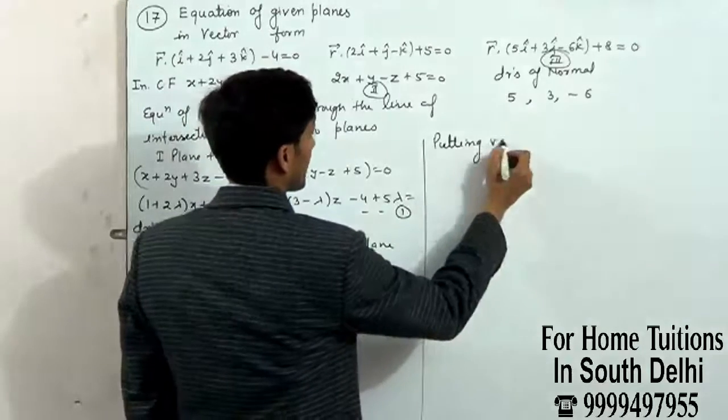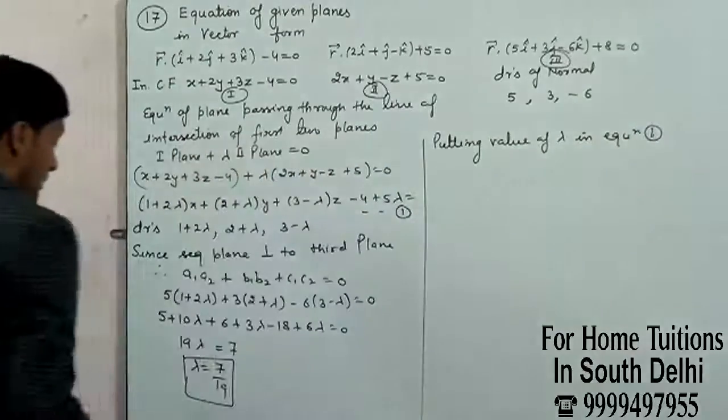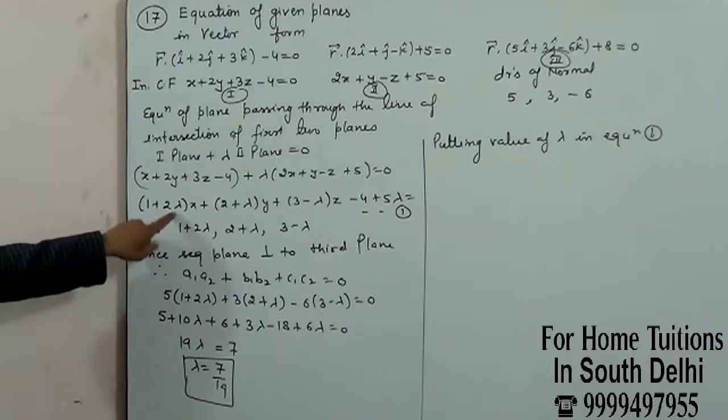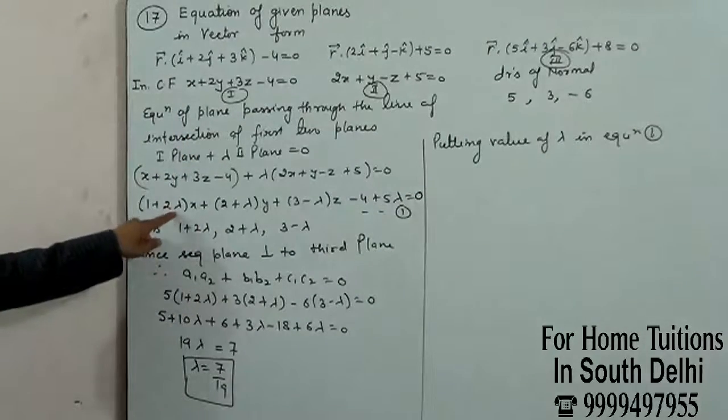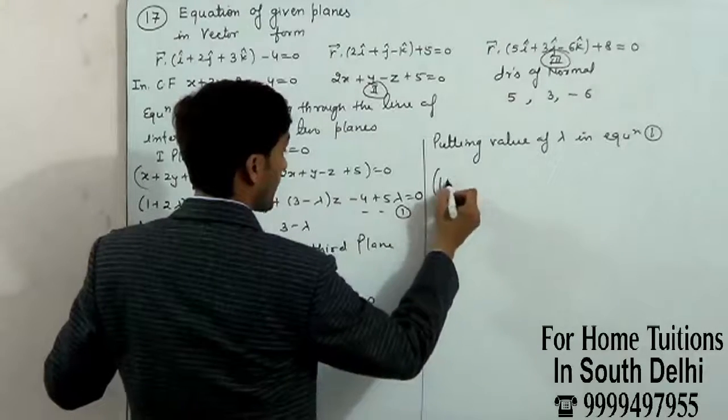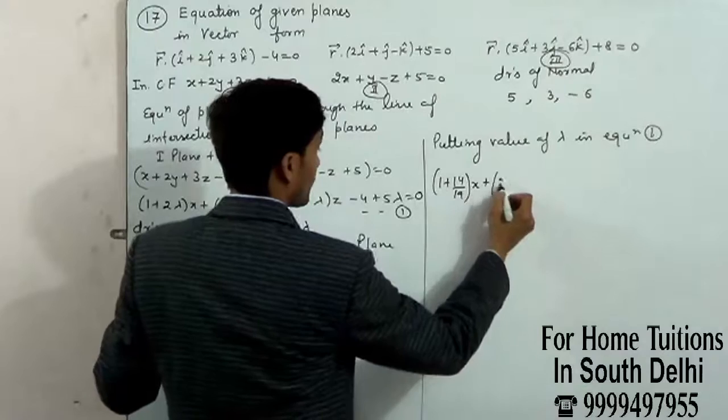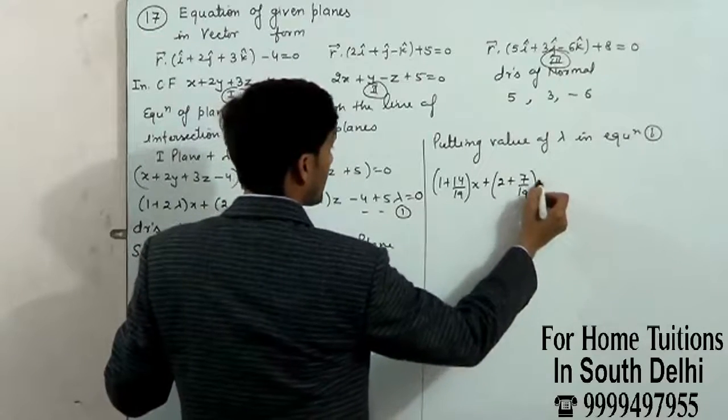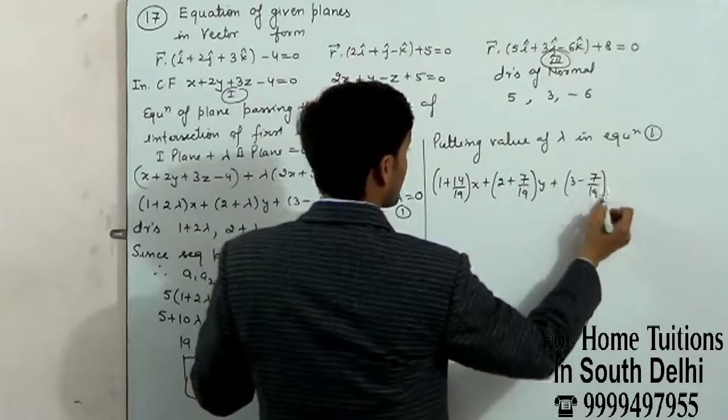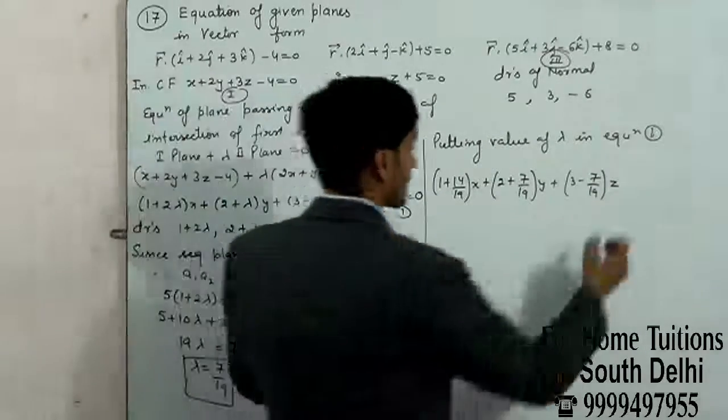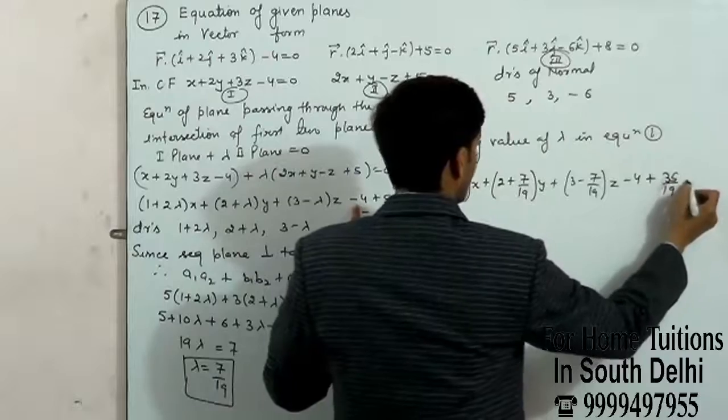Substituting value of lambda in equation first. X(1 plus 14 by 19) plus Y(2 plus 7 by 19) plus Z(3 minus 7 by 19) minus 4 plus 5 times 7 by 19 equals 0.